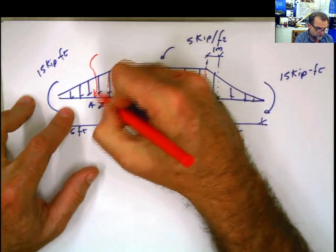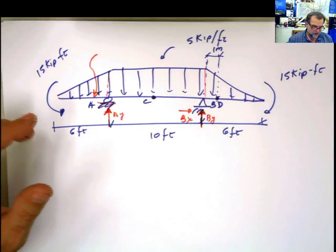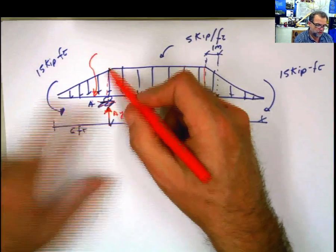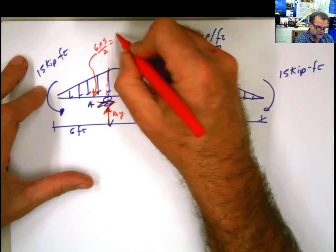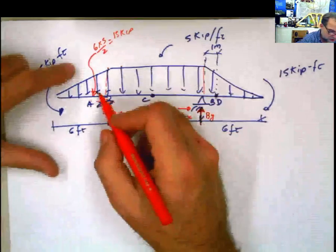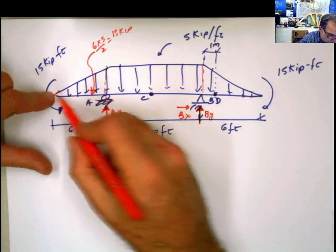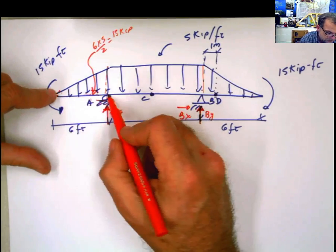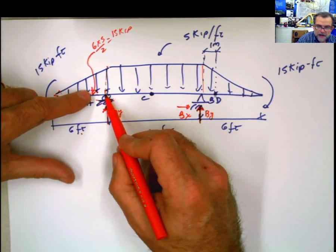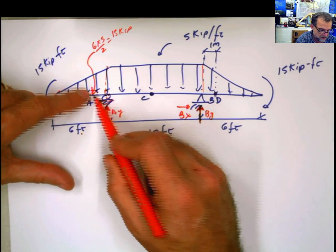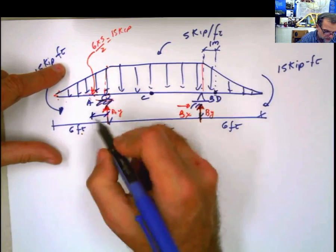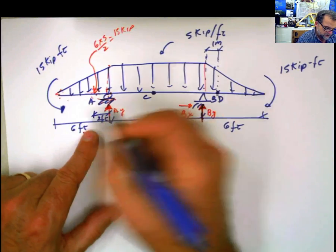The triangular distributed force is going to be equivalent to a concentrated force of 6 times 5 divided by 2, which is 15 kips. The location of that force is two-thirds from the acute angle — that's 4 feet — or one-third from the right angle, which is 2 feet.